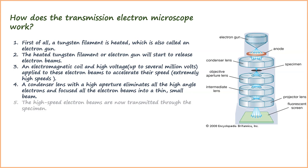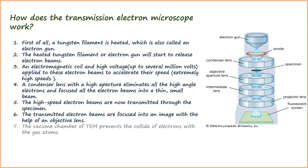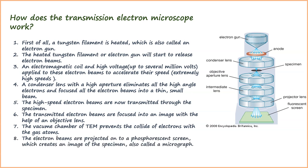The high-speed electron beams are now transmitted through the specimen. The transmitted electron beams are focused into an image with the help of an objective lens. The vacuum chamber of TEM prevents the collision of electrons with gas atoms. The electron beams are projected onto a phosphorescent screen, which creates an image of the specimen, also called a micrograph.